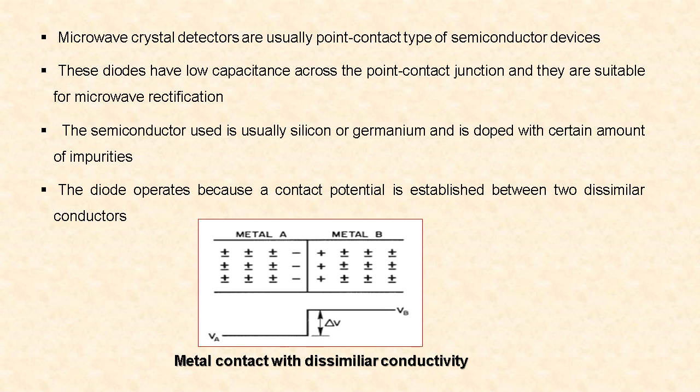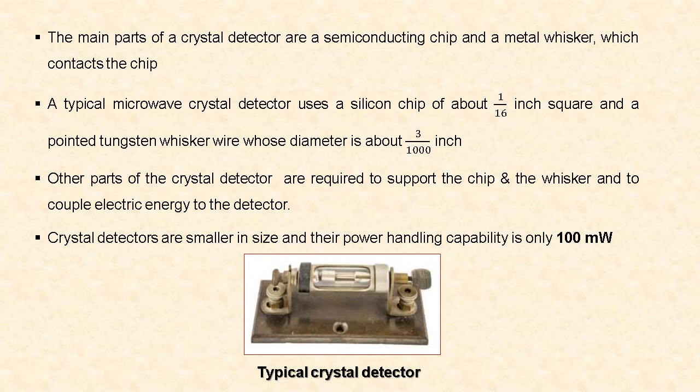Hence a potential barrier will be formed at the junction, which provides rectification. The main parts of a crystal detector are a semiconducting chip and a metal whisker which contacts the chip. A typical microwave crystal detector uses a silicon chip which is about 1/16 inch square.